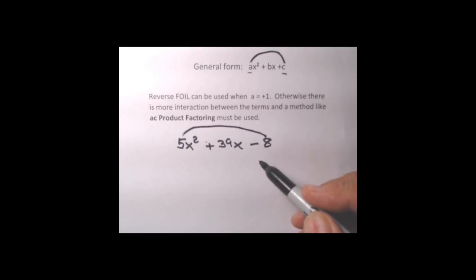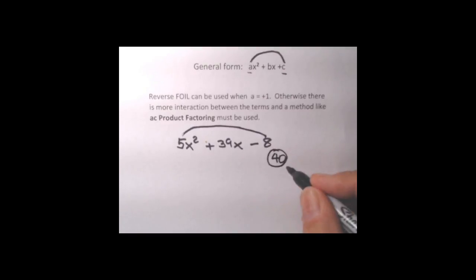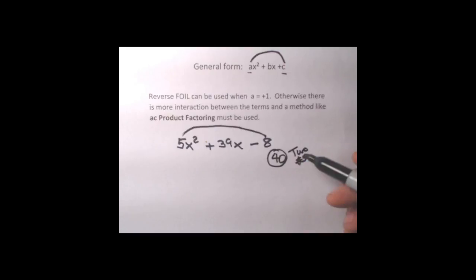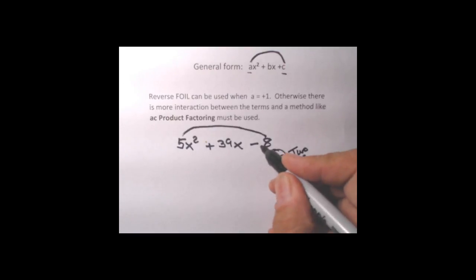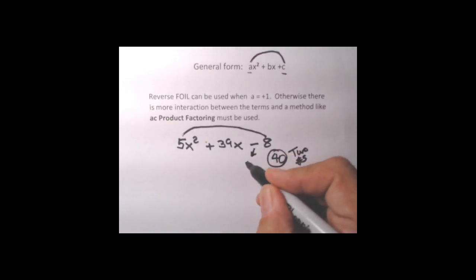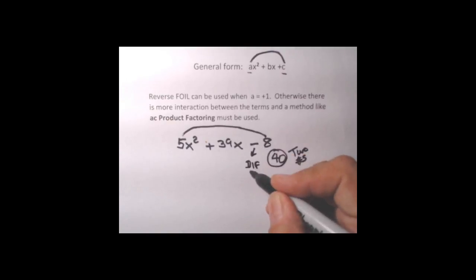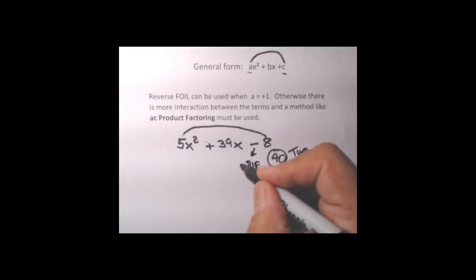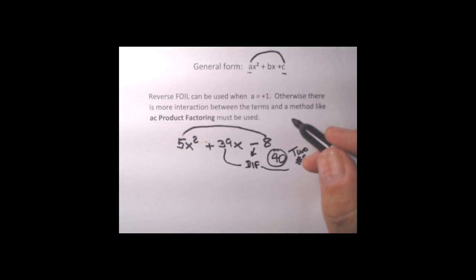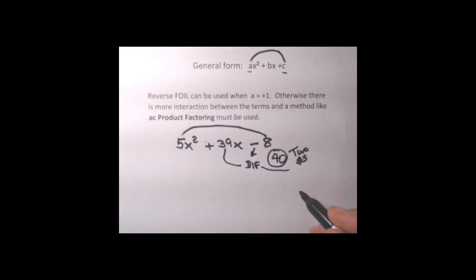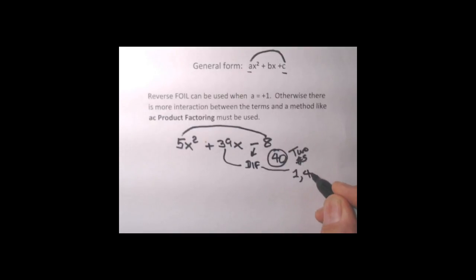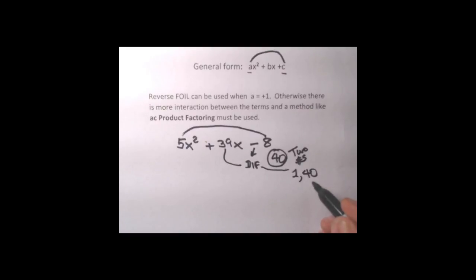5 in front has to multiply the 8 in back. We don't have to worry about the signs at the moment — we'll handle those with our method. 5 times 8 gives me 40, and 40 is the number we're going to play our two-number game with, very much like we did with reverse FOIL. I want two numbers that multiply together to give me 40. Since the sign in front of the 8 is negative, that means difference. So I want two numbers multiplied together to give me 40 whose difference is 39. That's quite a big difference — how about 1 and 40? 1 times 40 equals 40, and the difference between 1 and 40 is 39.